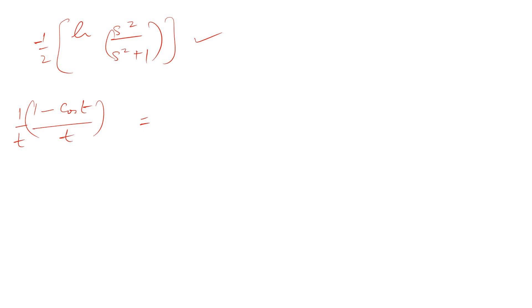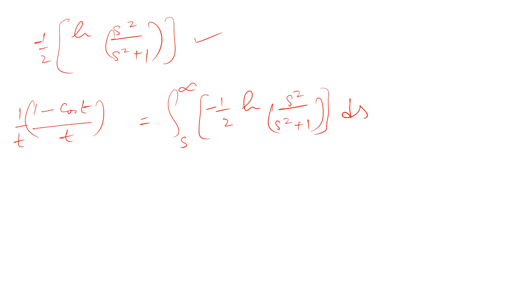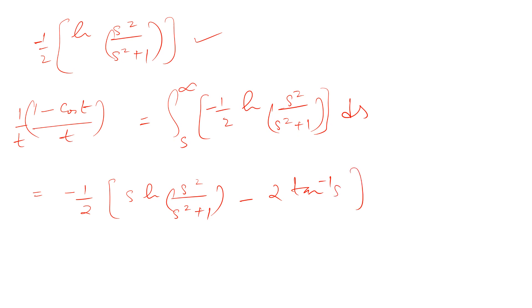Now I will find the Laplace transform of (1 - cos t) / t², which means multiplying (1 - cos t)/t by 1/t. To do that I have to integrate this function again with respect to s. Using integration by parts, I get s·ln(s² / (s² + 1)) minus 2·tan⁻¹(s), evaluated from s to infinity.